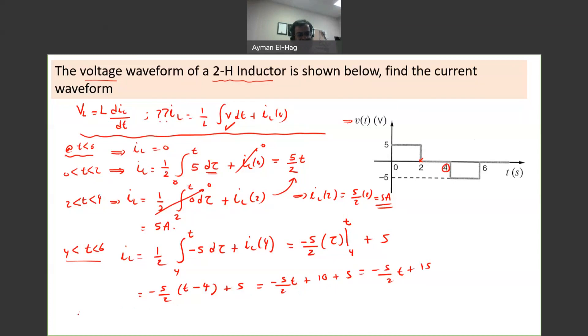Now, the last thing, at T greater than 6, the voltage goes back to 0. So IL equals 1 half, integration from 6 to T. It doesn't really matter because it equals 0, d tau, plus IL at 6. We want to find this current at T equal to 6.